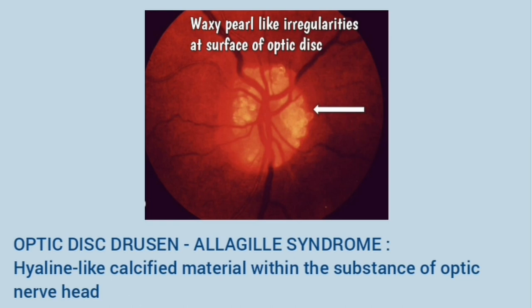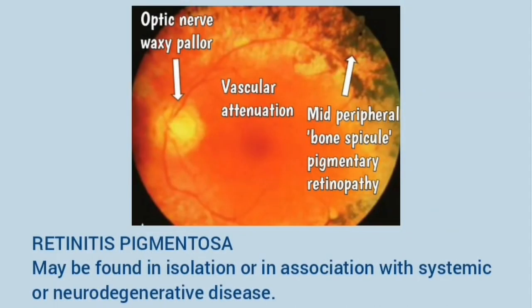This is optic disc drusen, typically present in Alagille syndrome. There are druse-like irregularities at the surface of the optic disc due to accumulation of hyaline-like calcified material within the substance of the optic nerve head. This is retinitis pigmentosa, which may be found in isolation or in association with systemic or neurodegenerative disease. It is characterized by mid-peripheral bone spicule pigmentary retinopathy, vascular attenuation, and optic nerve pallor.